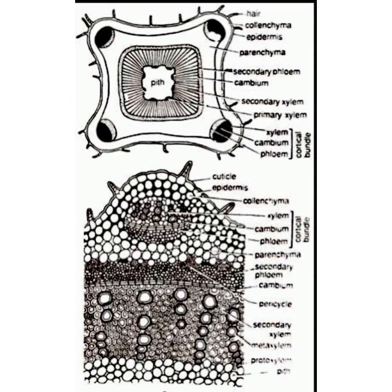The third one is the cortical bundles. These are four vascular bundles present in the cortex, situated one in each protruded corner. Each cortical bundle faces its xylem end towards the outer side; that is, they are conjoint, collateral, open, and exarch.